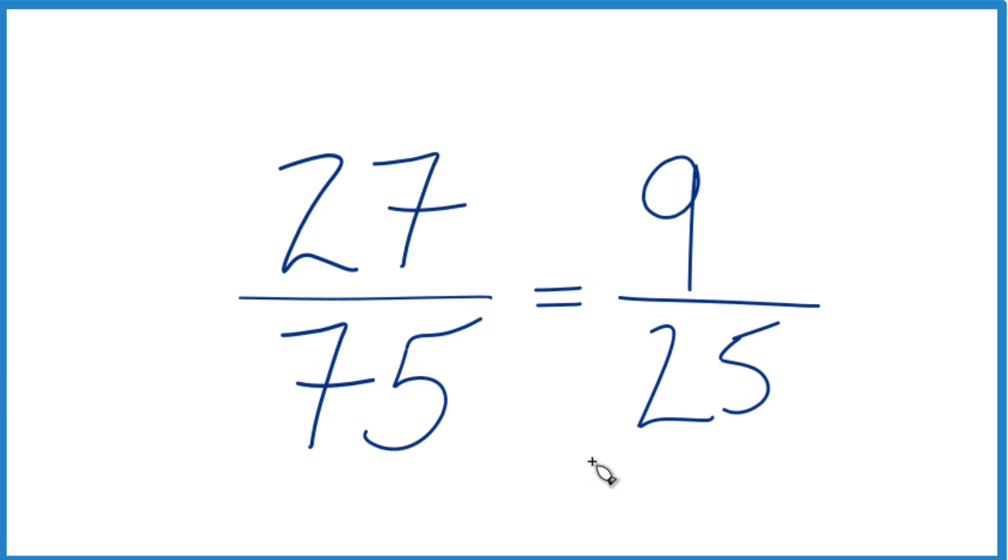Just 9/25, that's the simplified form of 27/75. It's Dr. B, thanks for watching.